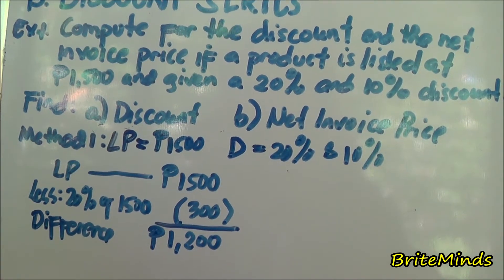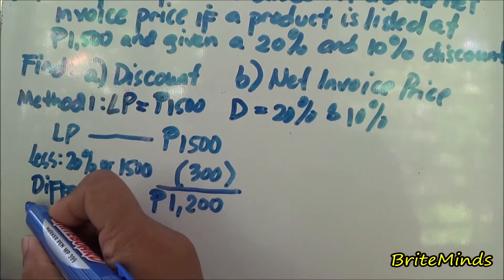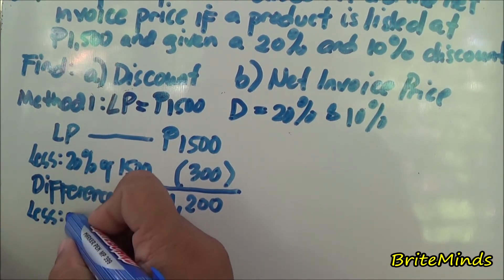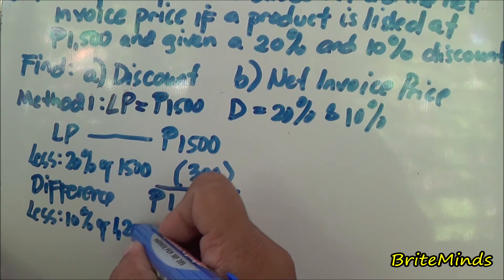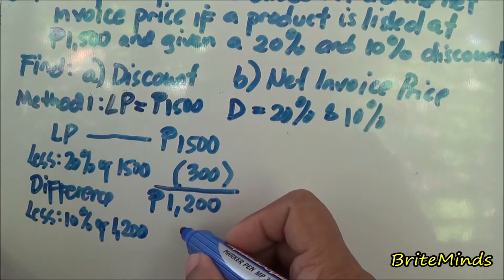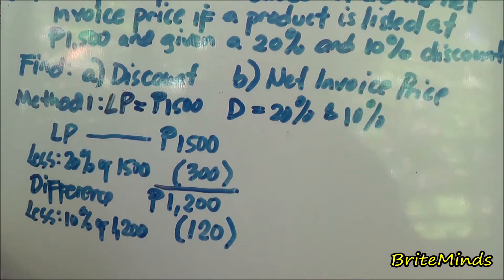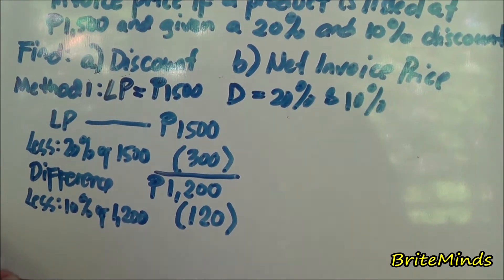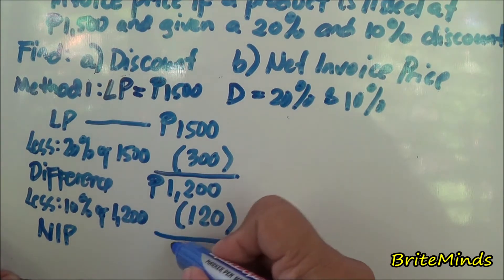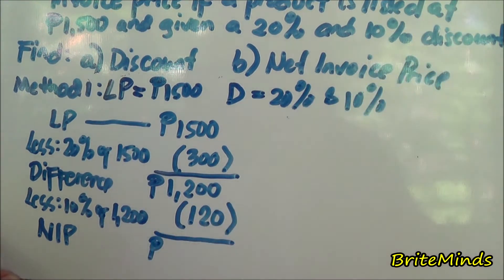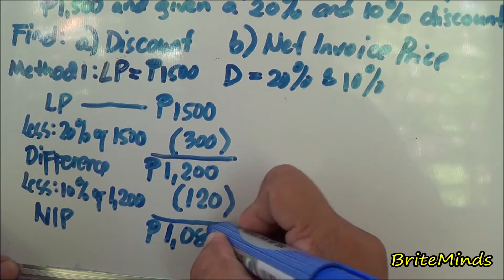We still have one discount remaining. So less 10% of the balance, which is 1,200. So 10% of 1,200 is 120. Then the net invoice price is 1,080 pesos.